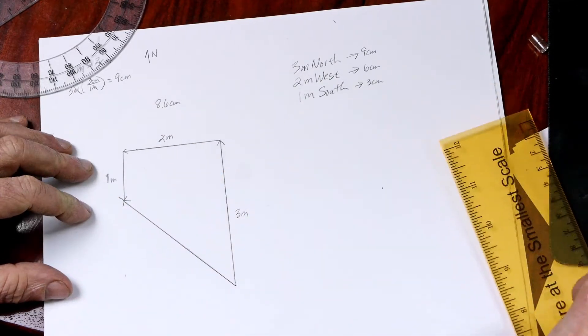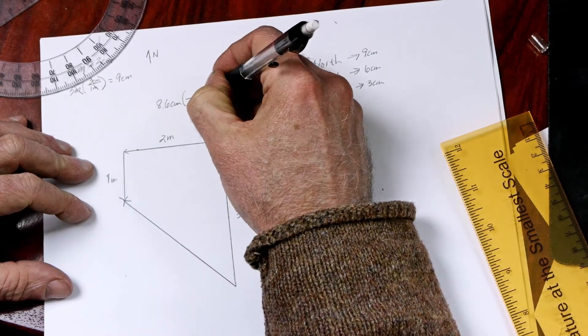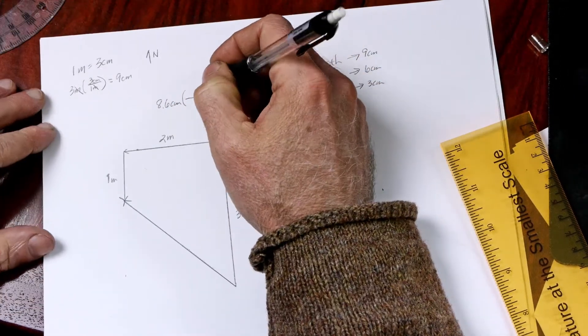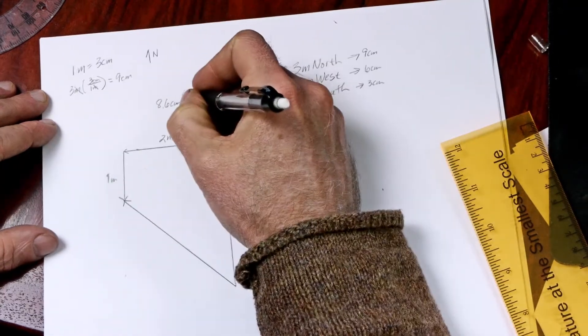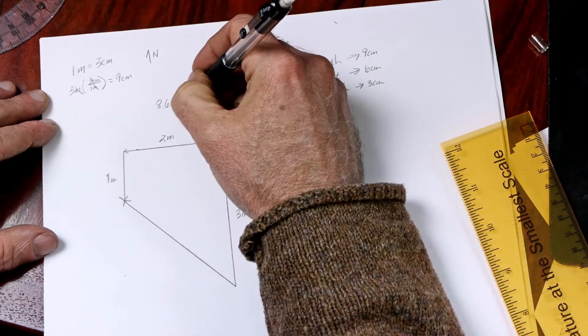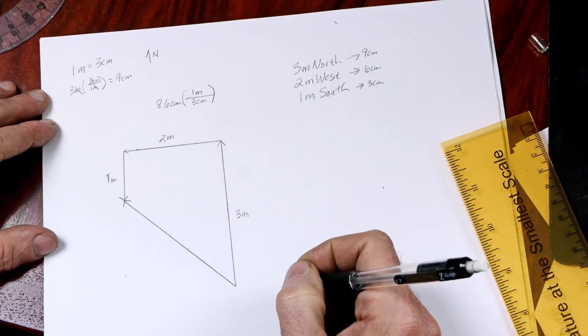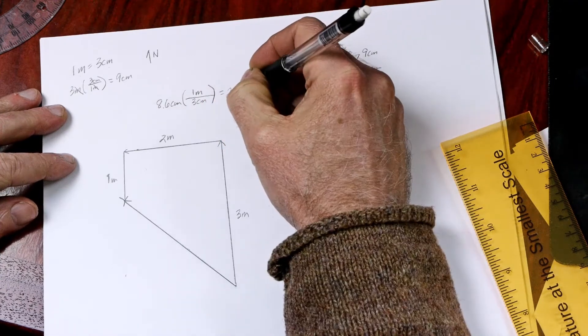So how many meters is that? Well, let's multiply by one's. And here's my scale. So I want the centimeters to go away, so I'm going to put centimeters in the denominator and meters in the numerator. Equals 2.87 meters.